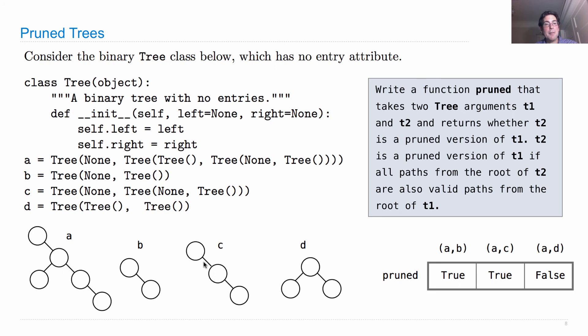And C, likewise, is a pruned version of A, because there's C right there. But D is not. So we find that pruned A,D is false, because there's a path that starts at the root and then goes left to find a leaf. And such a path does not exist. If we start at the root of A, we cannot go to the left to find a leaf, because there's just nothing there.